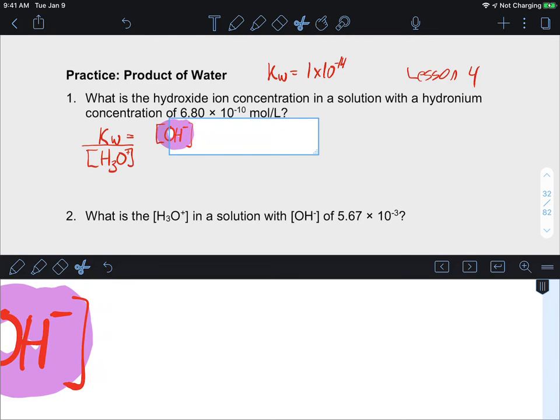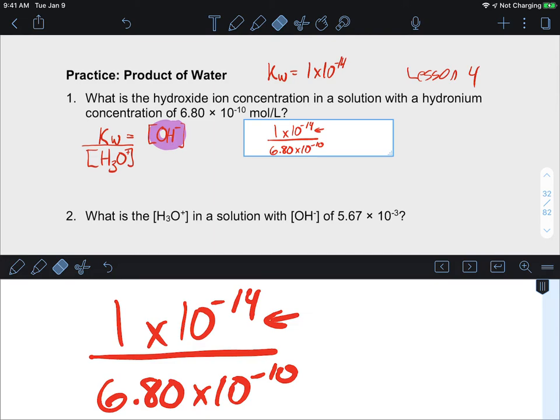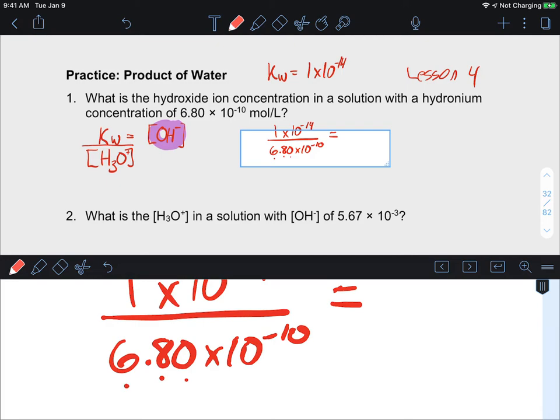All we're going to do is we're just going to set up our equation like this. We're going to move the hydroxide, the hydronium over, and then we're going to calculate. So I'm going to do 1 times 10 to the negative 14 divided by 6.80 times 10 to the negative 10.